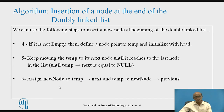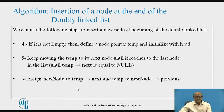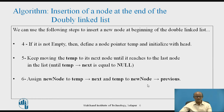In the sixth step, once we reach the last node, we assign new_node to temp->next, linking the last node to the new node. We also assign temp to new_node->previous, so the new node points back to the previous last node. We will see this diagrammatically step by step in the next slides.